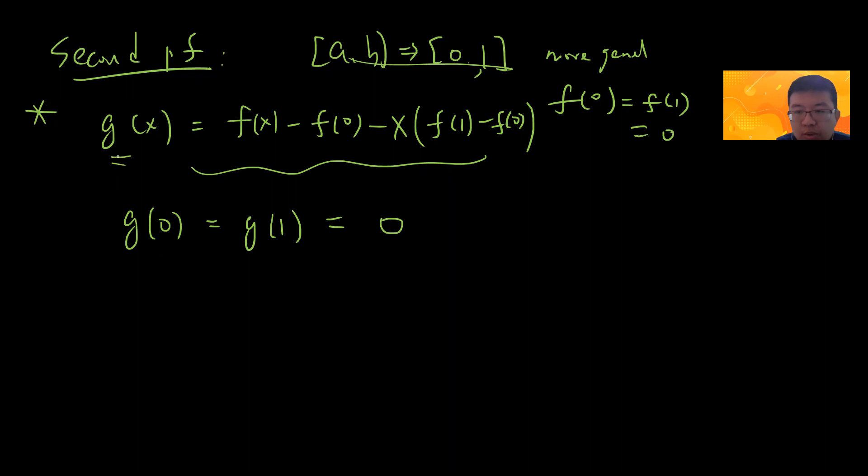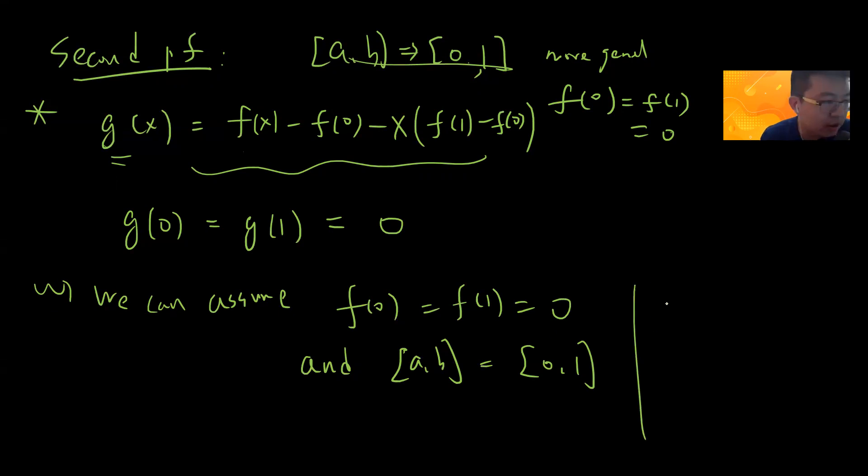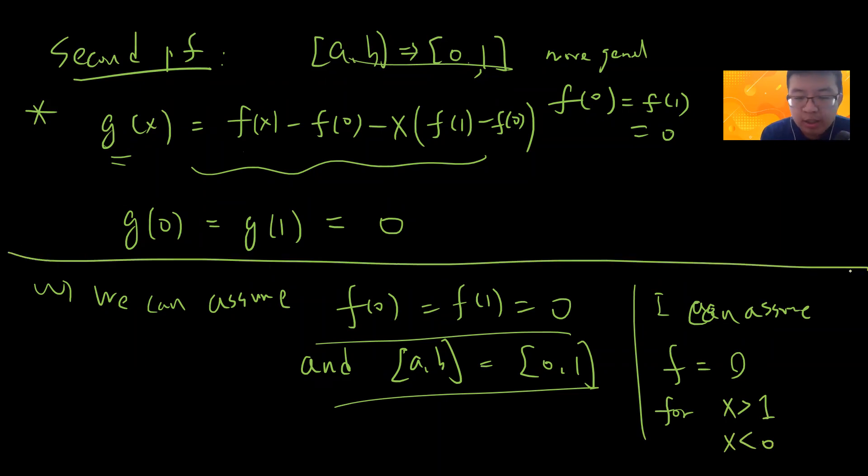The key idea is that if g can be approximated by some uniform convergence polynomial p, then f can also be approximated by p. So basically we can assume f(0) and f(1) is 0 and I only can talk about [a,b] is [0,1]. I can define f to be 0 for x greater than 1 and x less than 0, because I don't care about that. I only care about this.